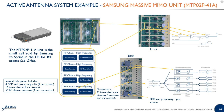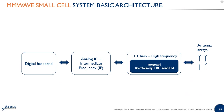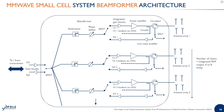For millimeter wave small cells it's a bit different because smaller powers are radiated and everything is integrated in monolithic microwave integrated circuits. You find the beamformer, power amplification, and everything needed featured in a single chip with four to eight RF chains embedded. You multiply these chips on the board to obtain up to 64 RF chains.